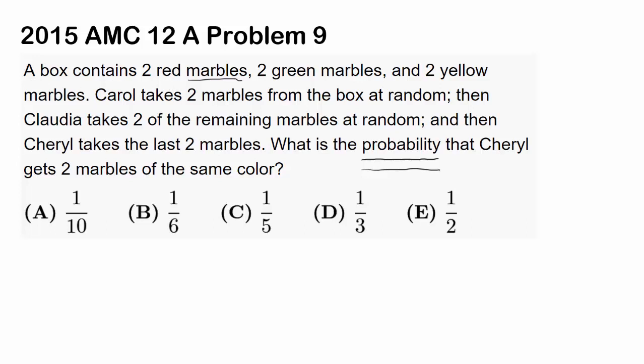A box contains 2 red marbles. So we have 2 reds, 2 green marbles. So we have 2 greens and 2 yellow marbles. Oh, that's orange, that's not yellow. Let's make it yellow. Maybe it's hard for you to see, so I'll outline it black. So you have 2 yellow, 2 green, 2 red.